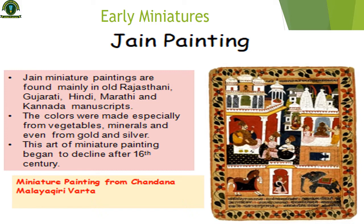In early miniatures, the first type is Jain paintings. Jain miniature paintings are found mainly in old Rajasthani, Gujarati, Hindi, Marathi, and Kannada manuscripts. The colors were made especially from vegetables, minerals, and even from gold and silver. This art of miniature painting began to decline after the 16th century.